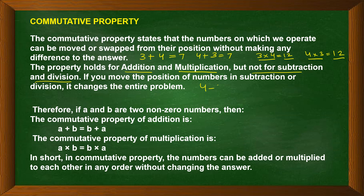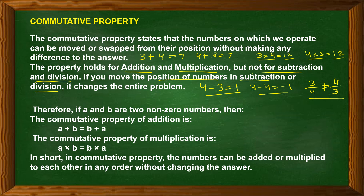For subtraction, 4 minus 3 equals 1, but 3 minus 4 equals minus 1 — different answers. Similarly, 3 by 4 is not equal to 4 by 3. The moment we change the position of the numbers in subtraction or division, the answer itself gets changed.